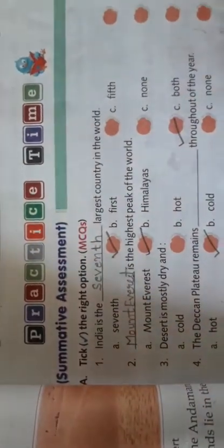Number A. Tick the right option. Number 1: India is the largest country in the world. A: 7th, B: 1st, C: 5th. It's 7th, 7th largest country in the world.